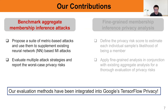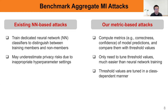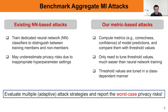Let's look at our first contribution, where we benchmark aggregate membership inference attacks. The intuition is that existing neural network-based attacks may underestimate privacy risks due to inappropriate hyperparameter settings. So in our metric-based attacks, we first compute model prediction metrics such as prediction correctness and prediction confidence, and then we compare them with threshold values. We only need to tune such threshold values, which is much easier than neural network training. The threshold values are tuned in a class-dependent manner. We emphasize we should evaluate multiple attack strategies and report the worst-case privacy risks.